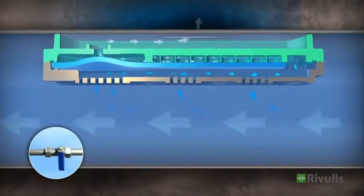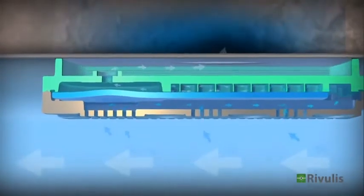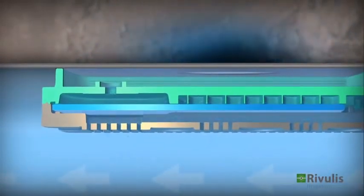At the end of the irrigation cycle, or when the water is turned off, the slit closes, preventing particles from being drawn into the dripper.